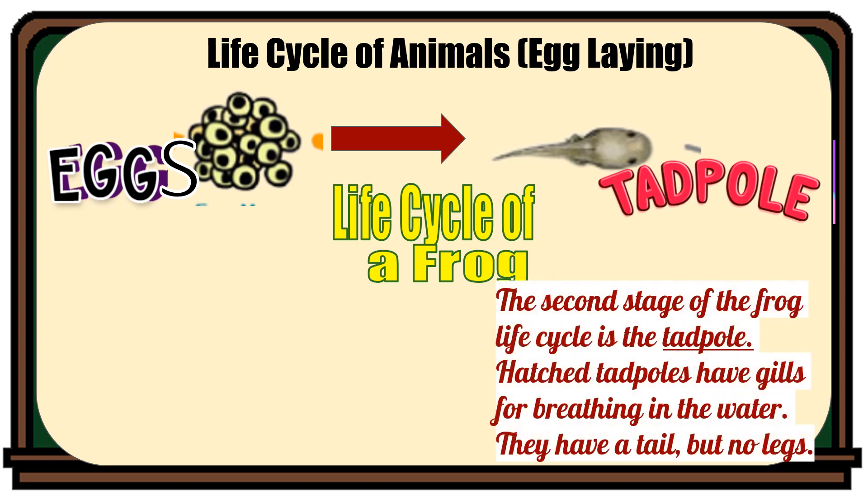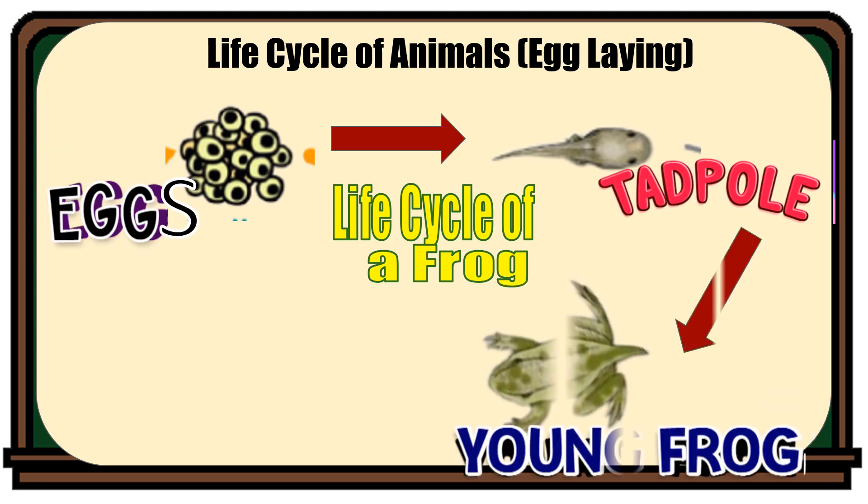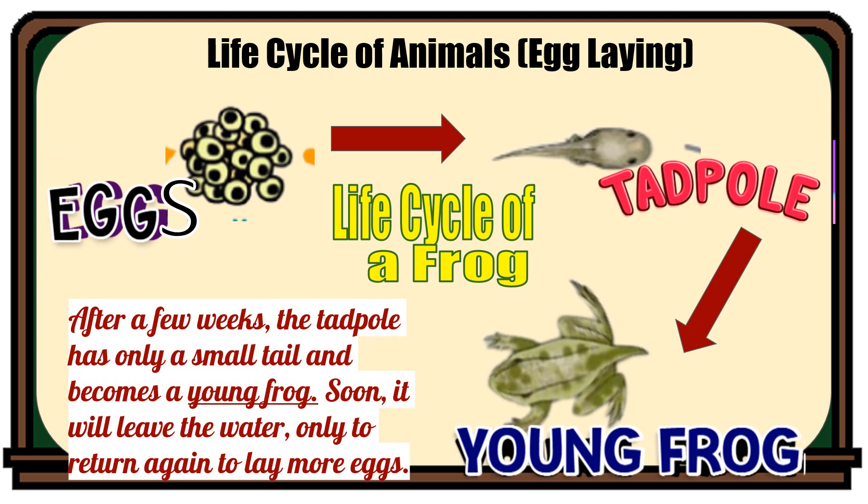The second stage of the frog life cycle is the tadpole. Hatched tadpoles have gills for breathing in the water. They have a tail but no legs. After a few weeks, the tadpole has only a small tail and becomes a young frog. Soon, it will leave the water only to return again to lay more eggs.